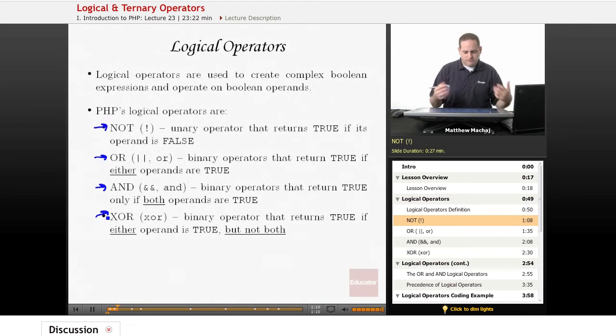The not operator is a unary operator that returns the opposite of whatever Boolean value it acts on. If you prepend the not operator, which is an exclamation point, to a Boolean value, it returns the opposite. So if you prepend it to true, it returns false. If you prepend it to false, it returns true.